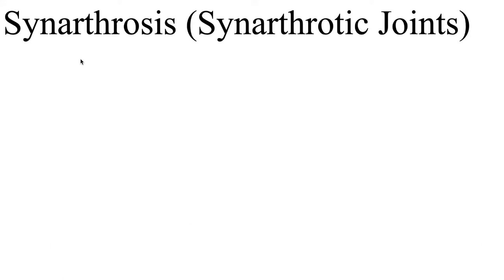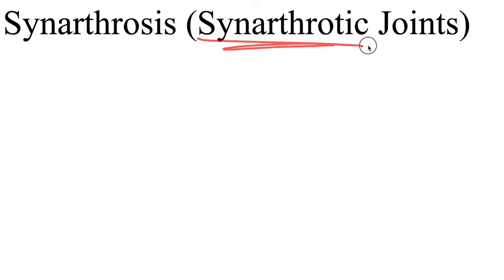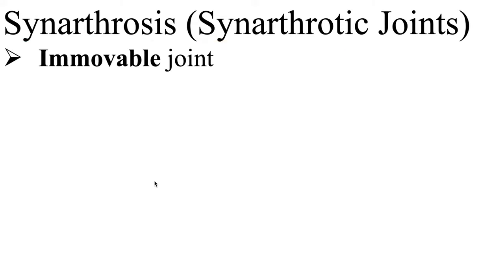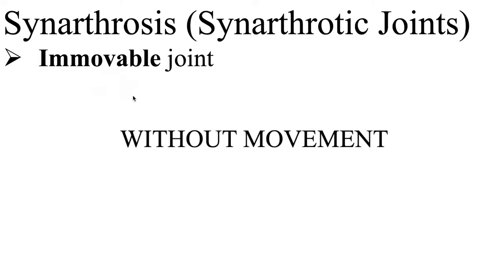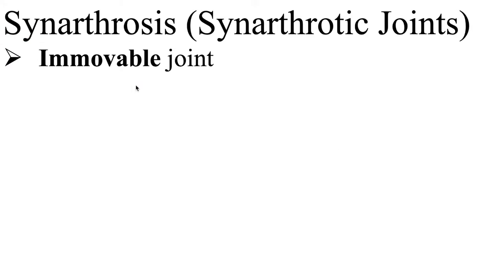The very first one is synarthrosis, also known as synarthrotic joints. These are immovable joints — in other words, these joints have no movement. If you're familiar with the Spanish word 'sin', this means without. So synarthrotic joints means immovable, without movement. If that helps you remember that synarthrosis joints are without movement, use it.